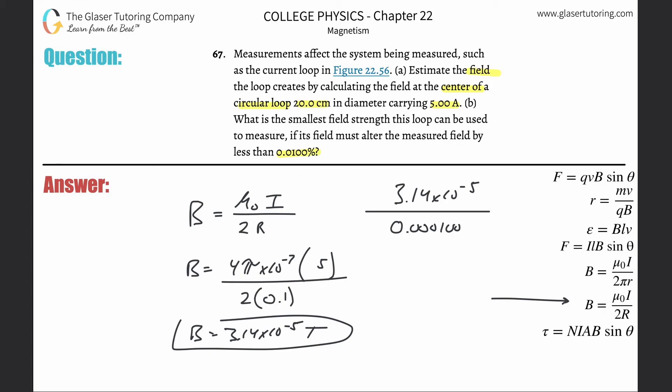When you do that, this is really just 1 times 10 to the minus 4, so you would subtract the exponents. But since this is a negative exponent, you're technically adding it. So it would be 3.14 times 10 to the minus 1 Tesla.